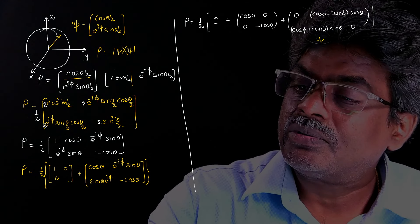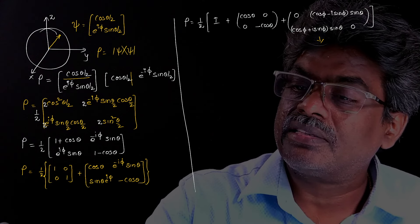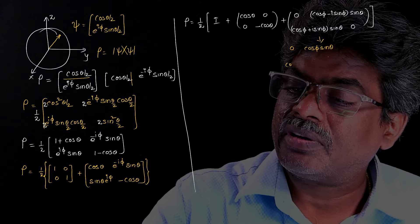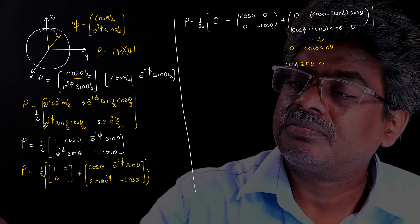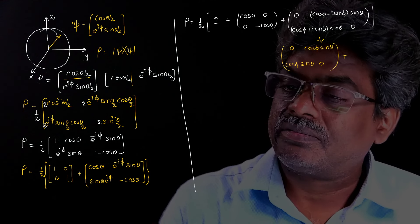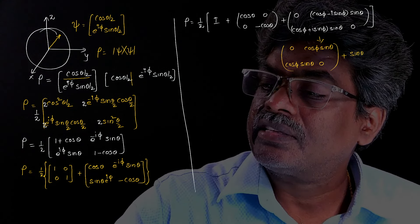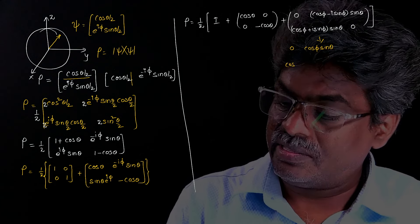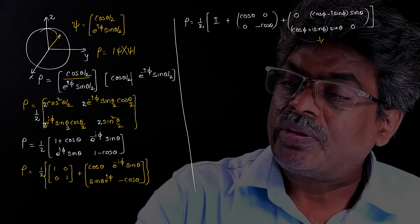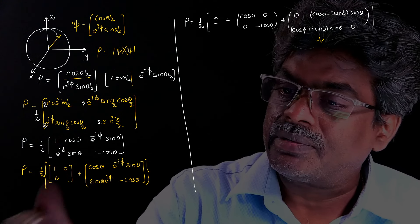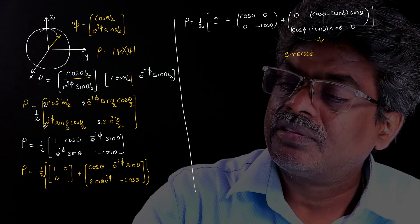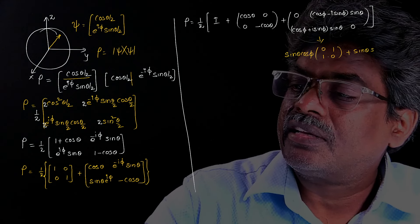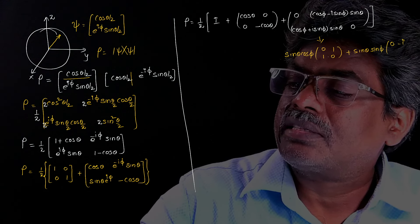Splitting further: I take sinθ cosφ common to get the matrix (0, 1 / 1, 0), which is sigma-x. Then I take sinθ sinφ common to get the matrix (0, -i / i, 0), which is sigma-y. So the total density operator rho equals 1/2 times: I plus cosθ times sigma-z, plus sinθ cosφ times sigma-x, plus sinθ sinφ times sigma-y.